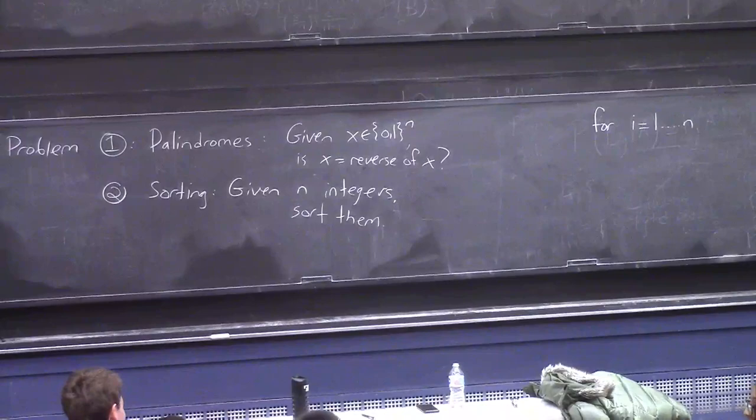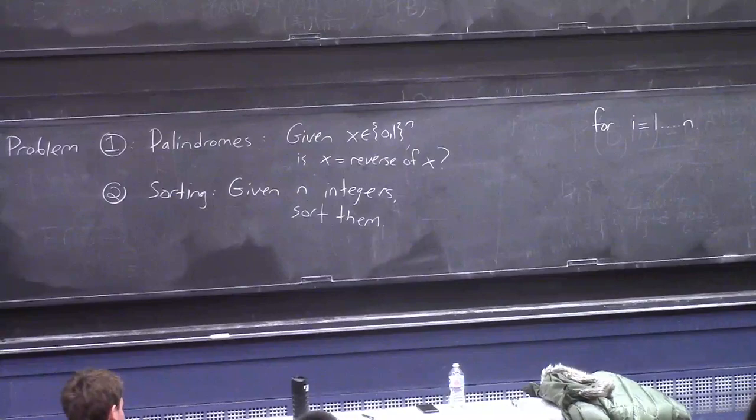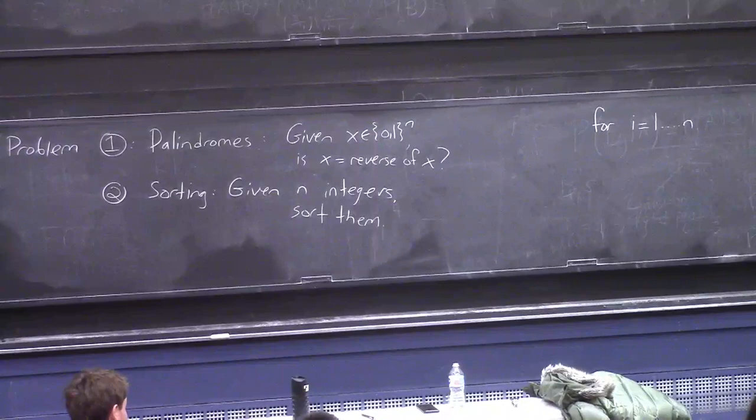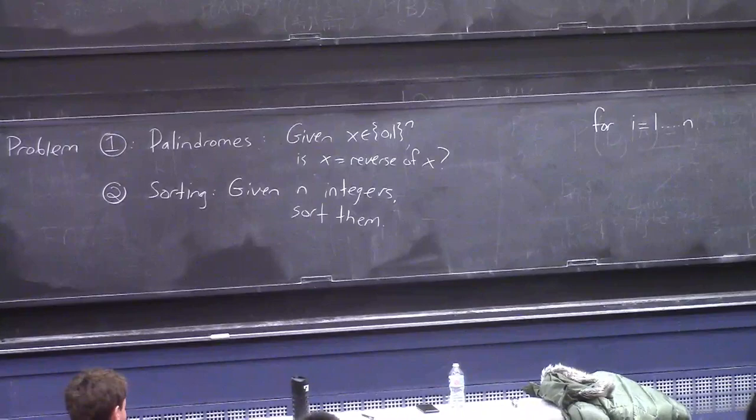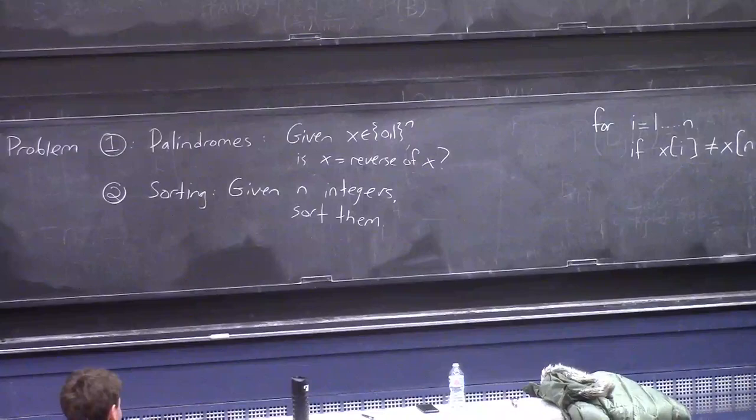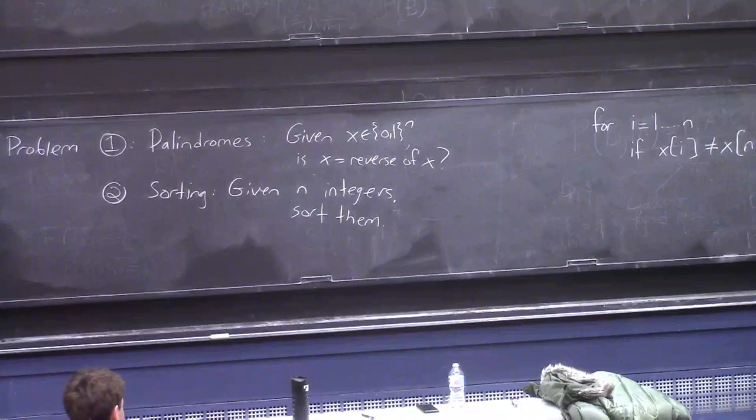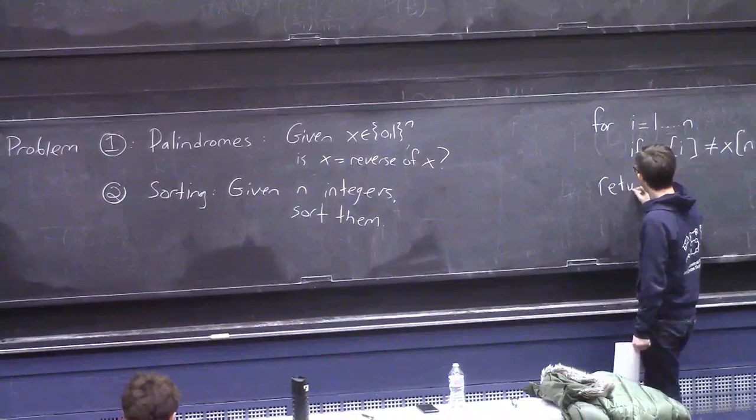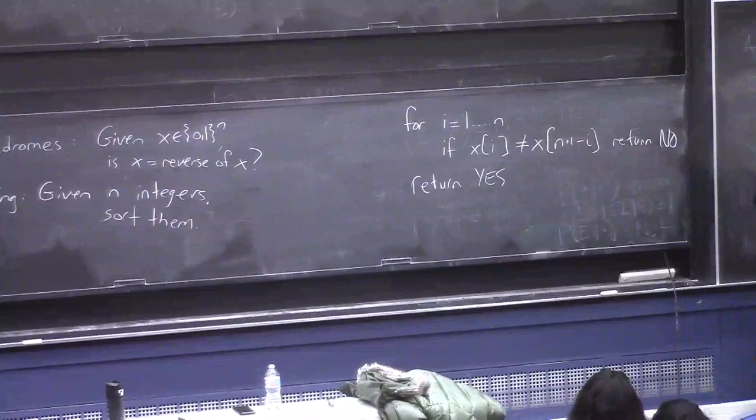I'll do the first line. For i equals 1 to n. Can somebody give me a couple more lines? Stop at n over 2. That's true. Let's get correctness first before we stop at n over 2. What if n over 2 is not an integer? If x of i does not equal x n plus 1 minus i. Did I get the off by 1s right? Then return no. And if you make it all the way to the end of the loop, return yes. All right, we did it. Great.